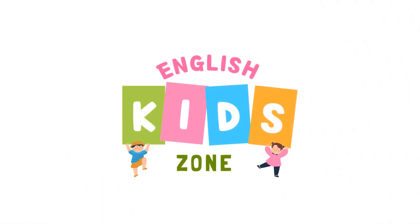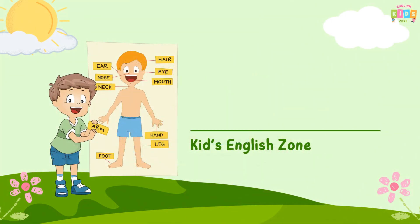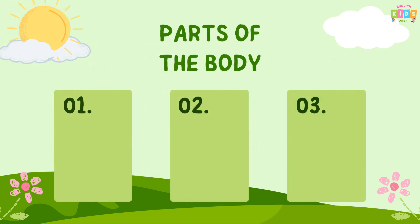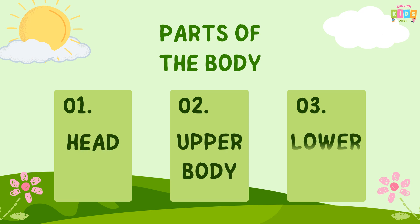Kids English Zone. Parts of the Human Body. Today, we're going to explore all the parts of our body, big and small. We'll divide them into three sections: head, upper body, and lower body. Okay, let's go.